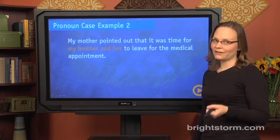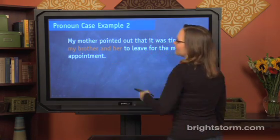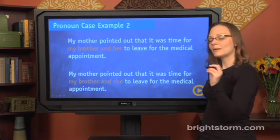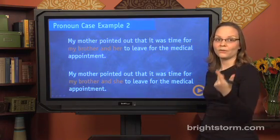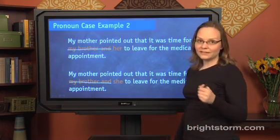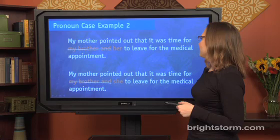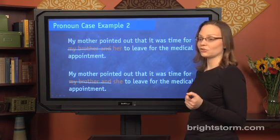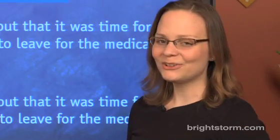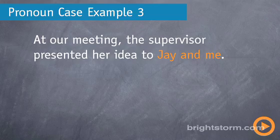Another example: we recognize that pronoun case is being tested because we have a pronoun joined by 'and' to another noun. We test both cases — 'her' and 'she' — in isolation, crossing out the noun and the 'and.' Listening to both: 'My mother pointed out that it was time for her to leave for the medical appointment' sounds off in context; the correct version uses 'she.' Last example: 'At our meeting, the supervisor presented her idea to Jay and me.' That sentence is already correct as stated.